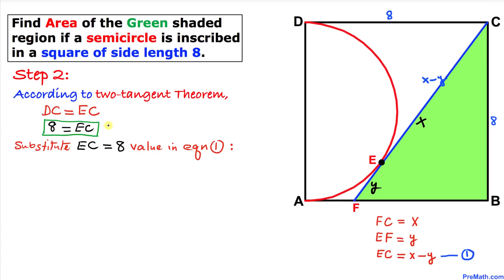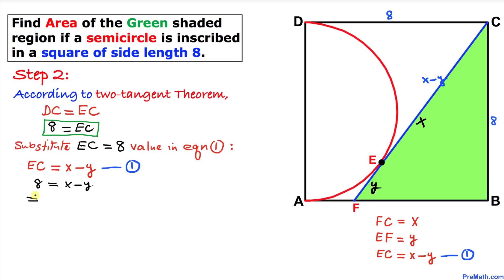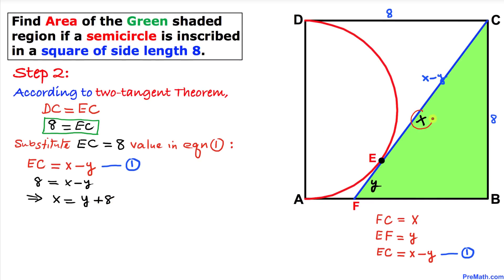Now let's substitute EC equals 8 into equation number one: EC equals x minus y, so 8 equals x minus y. That means x equals y plus 8. Since x is the length of line segment FC, we can write FC equals y plus 8.